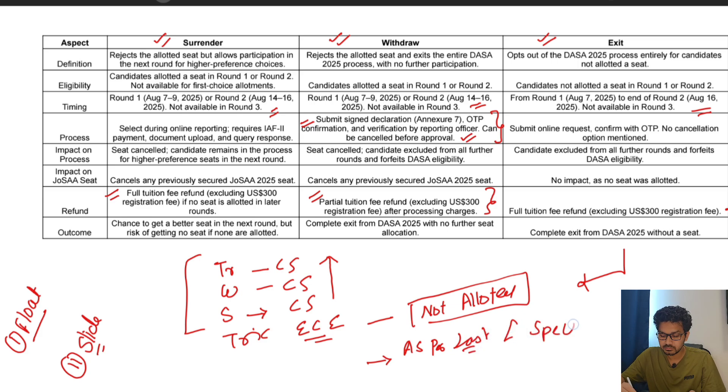If there is any special round that happens, if seats are vacant, only those students will be allowed to participate who are not allotted any seat. That means those who have chosen the exit option and not been allotted any seat will be eligible for the exclusive round - you can say spot round or vacant seat round. But this is as per last year only, not as per this year.